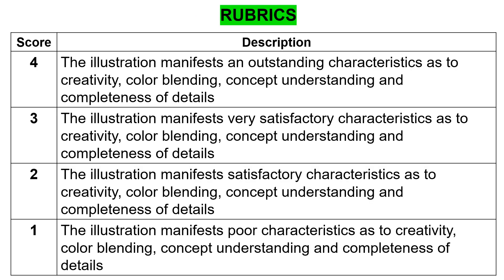Take note, class — we're going to use rubrics in scoring your output. You'll get a score of 4 if the illustration manifests outstanding characteristics as to creativity, color blending, concept understanding, and completeness of detail. You'll get 3 if the illustration manifests very satisfactory characteristics, and 2 if the illustration manifests satisfactory characteristics as to creativity, color blending, concept understanding, and completeness of details.